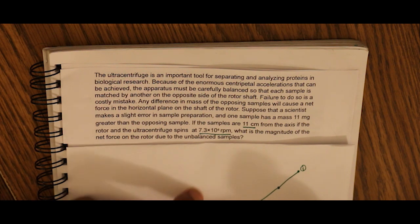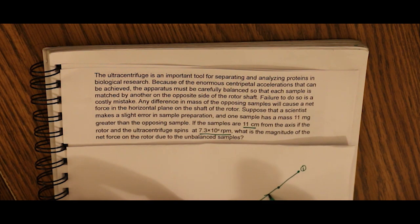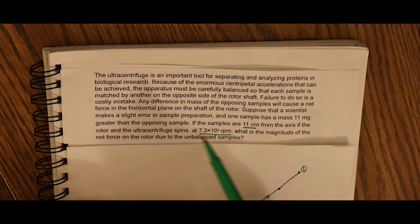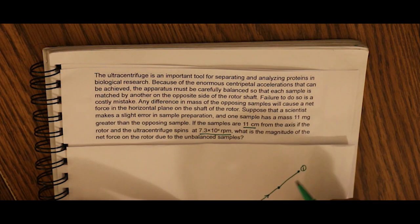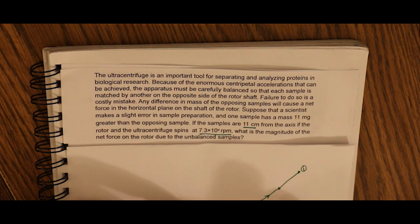Say if two is of a greater weight than one, there will be a net horizontal force towards the shaft. Suppose a scientist makes a slight error in sample preparation and one sample has a mass 11 milligrams greater than the opposite sample. So two is 11 milligrams — that's 11 times 10 to the negative 6 kilograms greater than sample one.